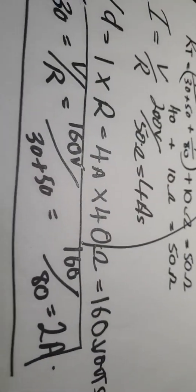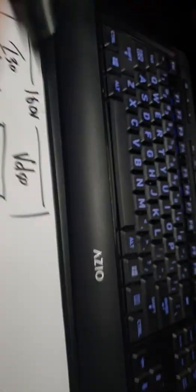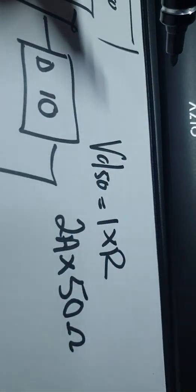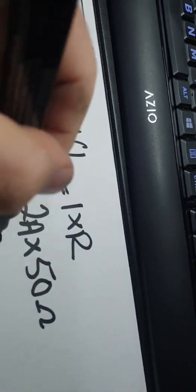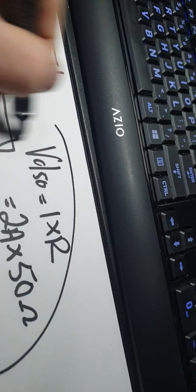Now voltage drop for the 50 ohm resistor, VD50, will equal I times R. So the current is 2 amps times 50 ohms equals 100 volts. So that is that one.